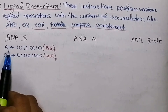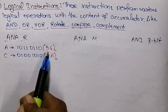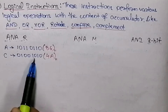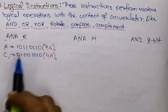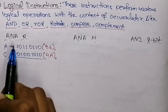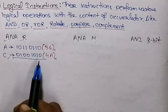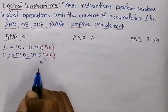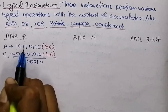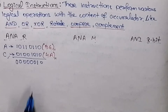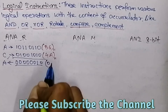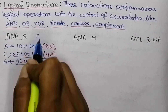Let's say the content of the accumulator is 10110110, which is B6 in hexadecimal, and register C contains 01001010, which is 4A in hexadecimal. If we perform the AND operation between accumulator and C register, the result is 1 only if both bits are 1. So: 1 AND 0 = 0, 1 AND 1 = 1, 1 AND 0 = 0, 0 AND 0 = 0, giving us 00000010, which is 02 hex. This result is stored in the accumulator after ANA C.